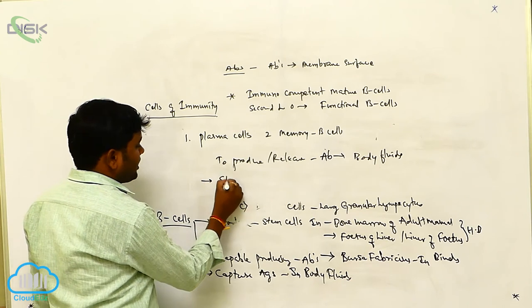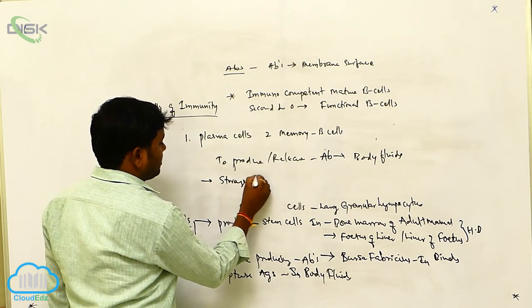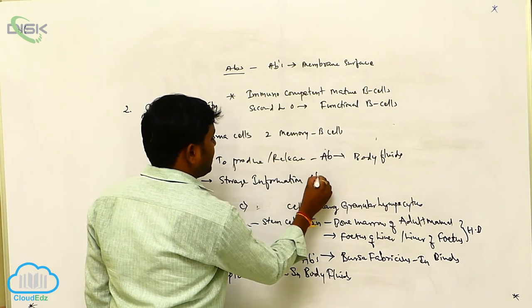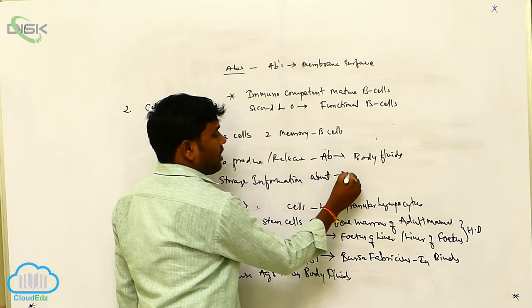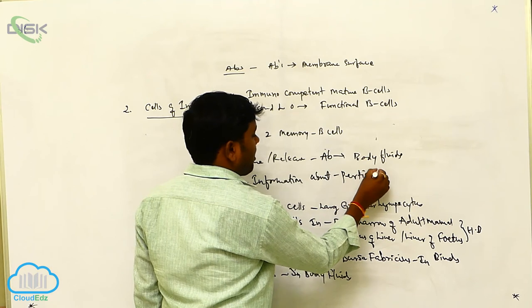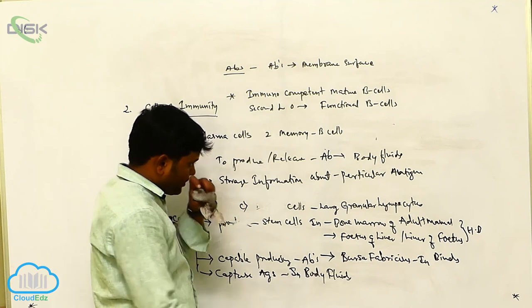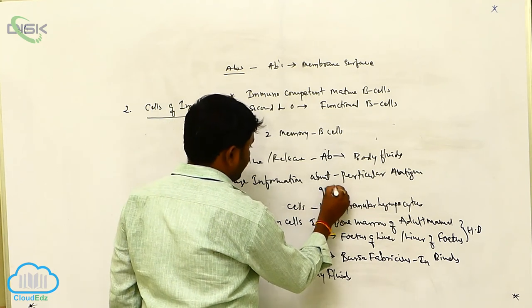Memory B cells store the information about a particular antigen for quick response.